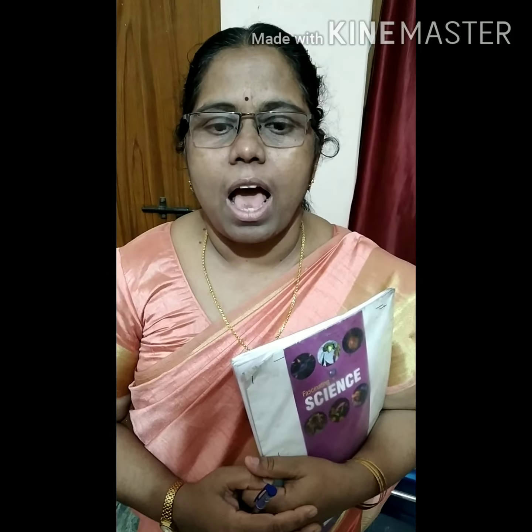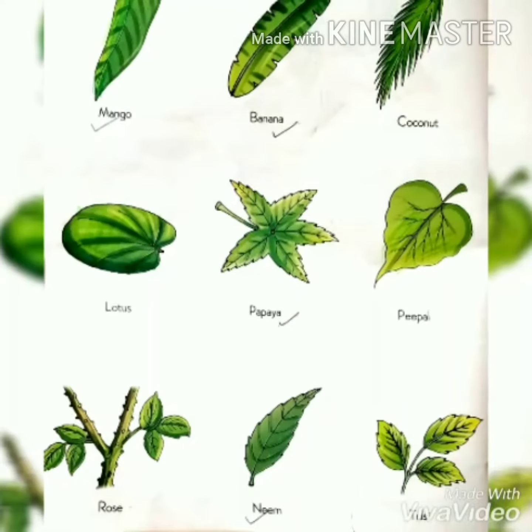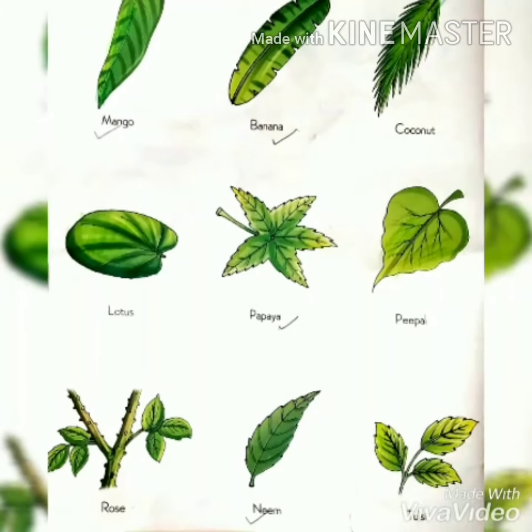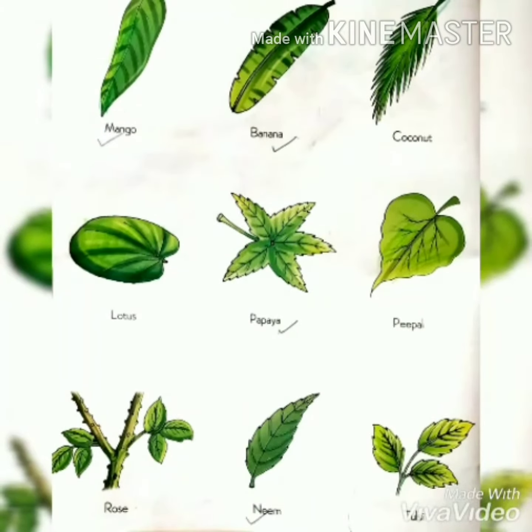Good morning students. Today I am going to teach you science. In the previous class we learned the names of three flowers and three fruits. I hope you all have learned them. This is part of the lesson 'Plants Around Us.' Today I will teach you the names of some leaves.